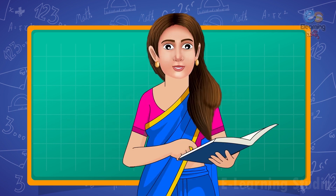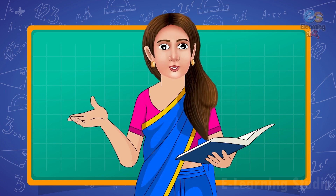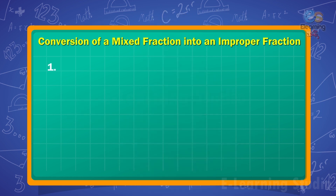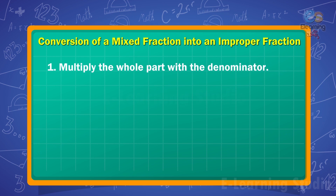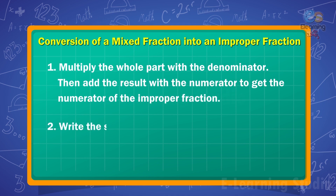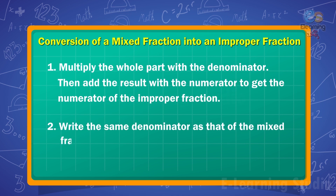Children, while converting a mixed fraction to an improper fraction, multiply the whole part with the denominator. Then add the result with the numerator to get the numerator of the improper fraction. And write the same denominator as that of the mixed fraction.